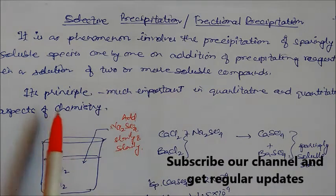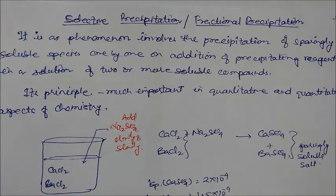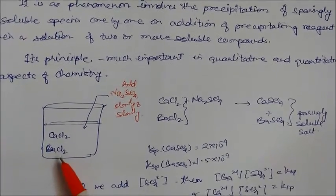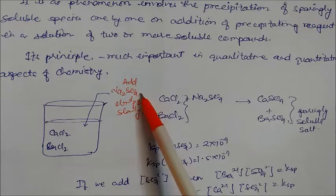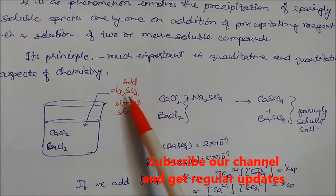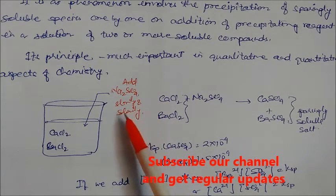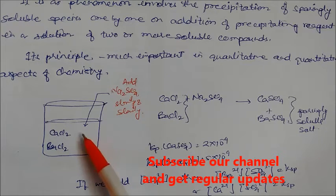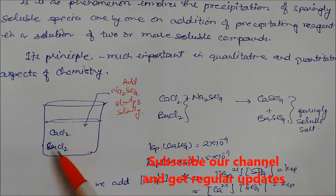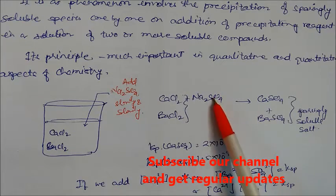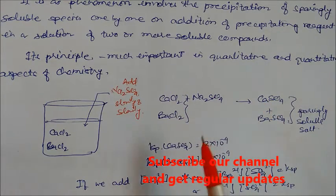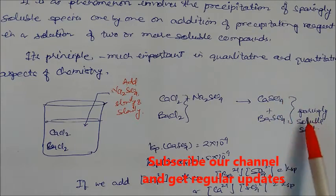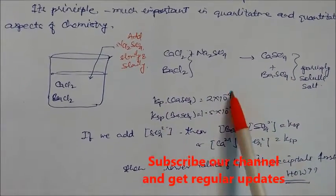We use this principle in both analyses of chemistry. Consider a vessel containing a solution of calcium chloride and barium chloride. We add a precipitating agent, sodium sulfate, slowly. When sodium sulfate is added, calcium chloride and barium chloride react with it to form calcium sulfate and barium sulfate respectively. These two salts are sparingly soluble and we know the Ksp values of both.